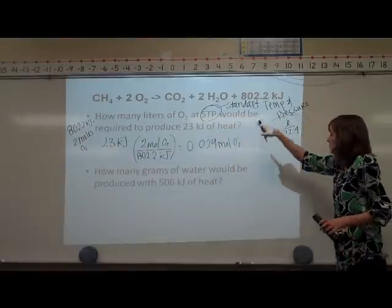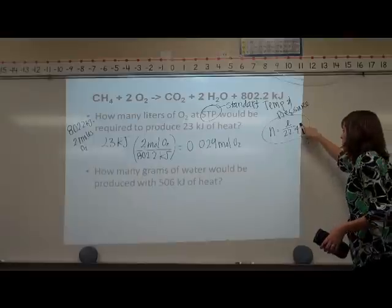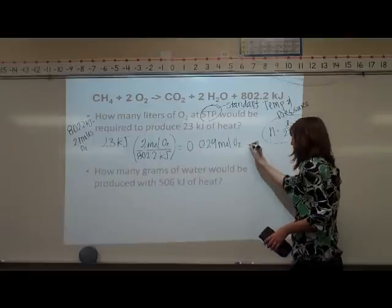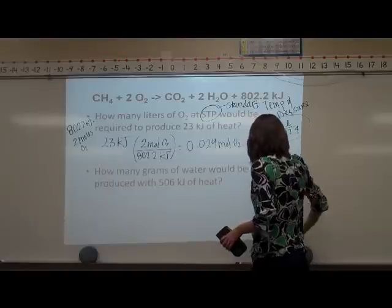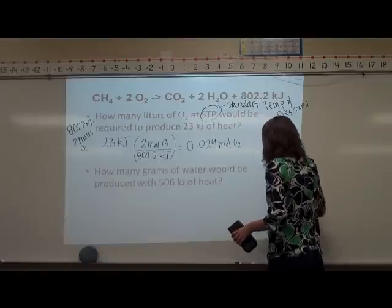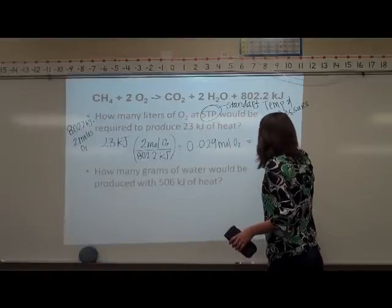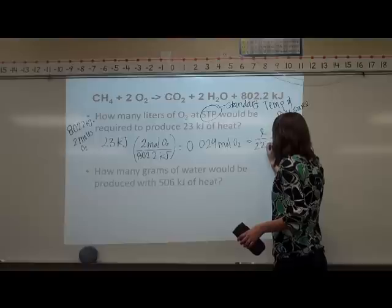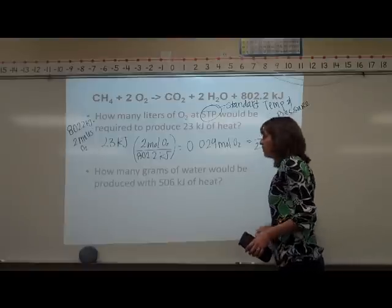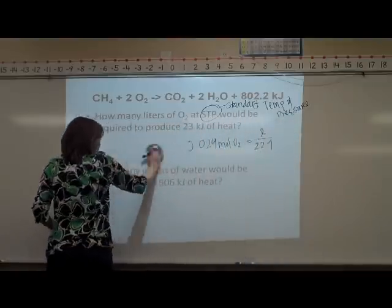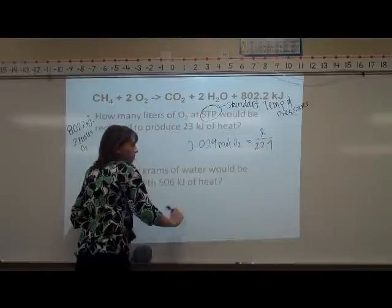Now that we have our moles of O₂, we have to apply it to this equation to get our liters. We're going to set this equal to L over 22.4. How we solve this problem is we're going to times both sides by 22.4, so our 22.4 over here will cancel.